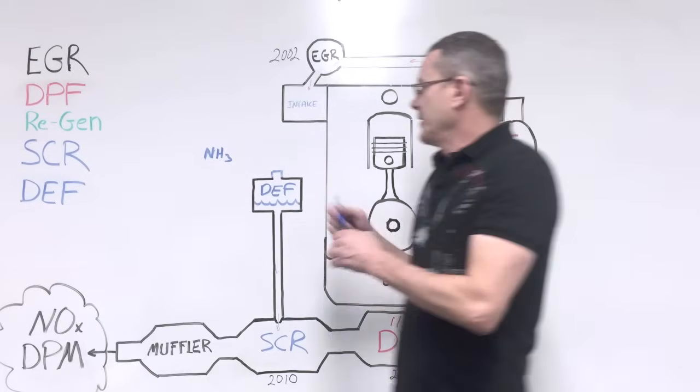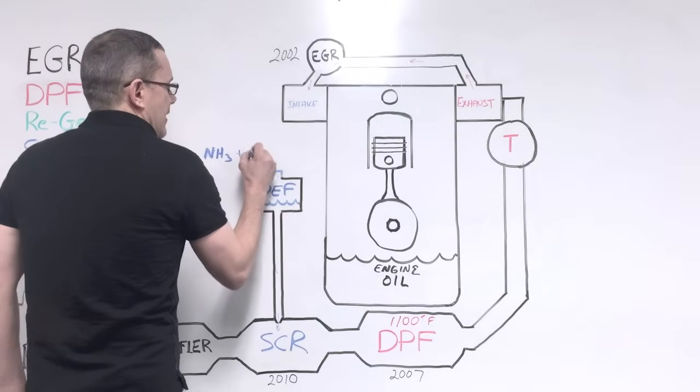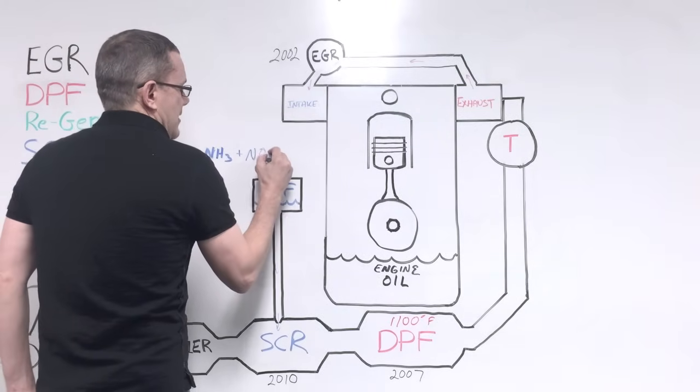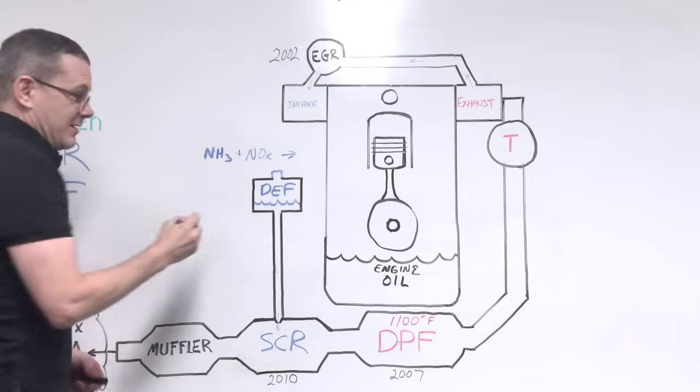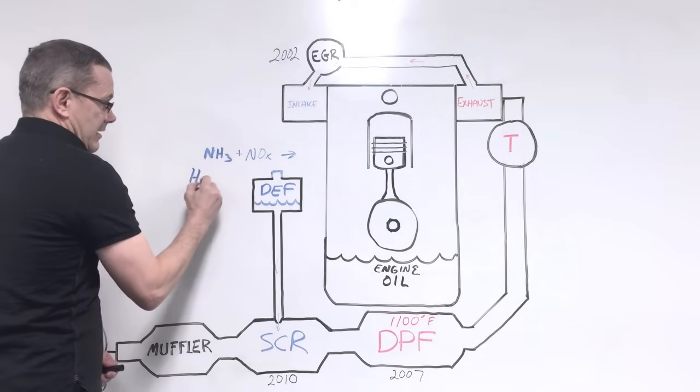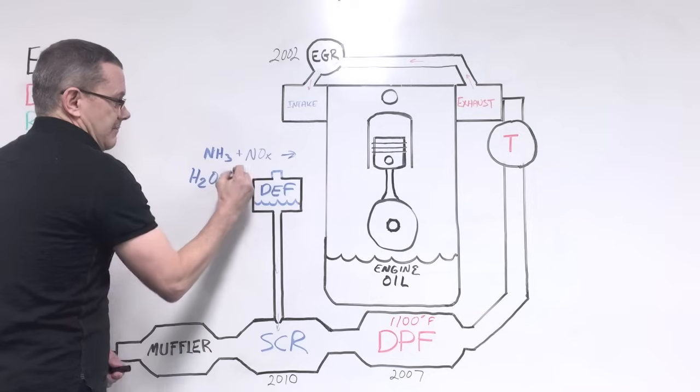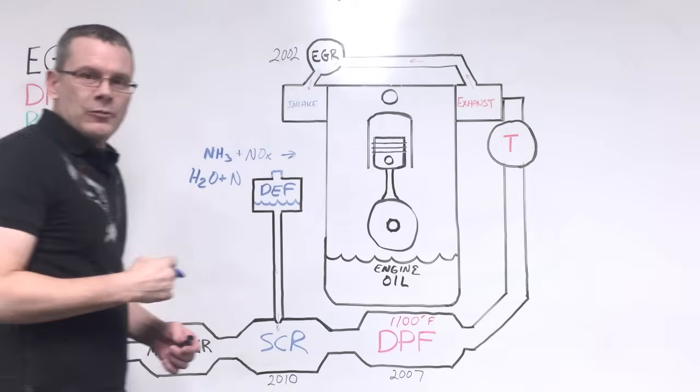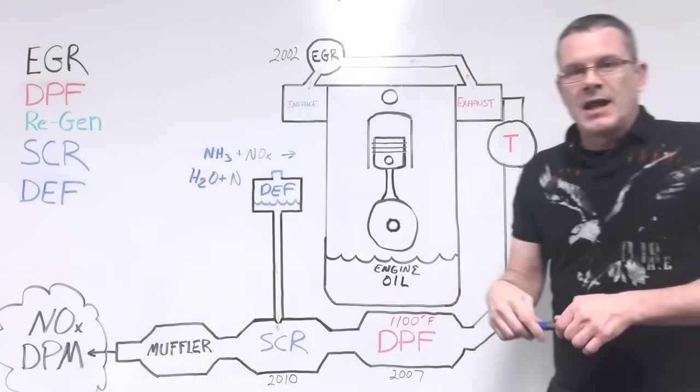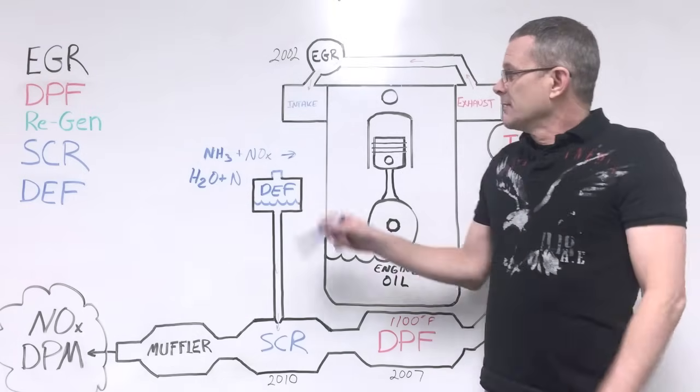The NH3, the ammonia, combines with the NOx from the engine, and out the tailpipe comes some nice harmless water and nitrogen. Those are things we normally breathe in the air, and everybody's happy when that happens.